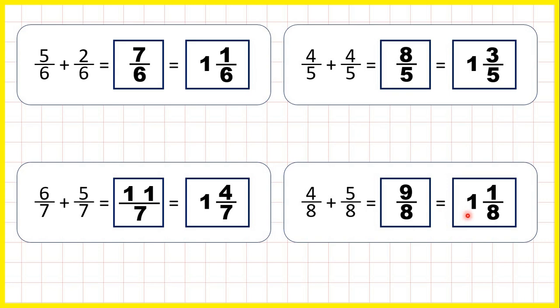Which means our mixed number is 1 and 1 eighth, because 9 divided by 8 is 1 remainder 1, and the denominator always stays the same.